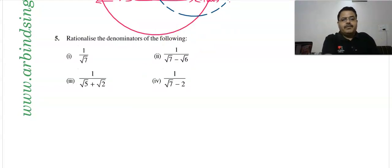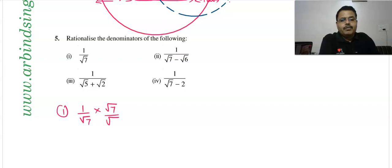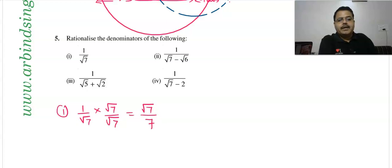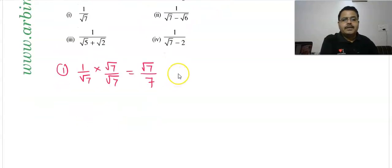Now rationalize the denominator of the following. First question: 1/√7. To rationalize, multiply top and bottom by √7. So √7 × √7 = 7. The answer is √7/7.